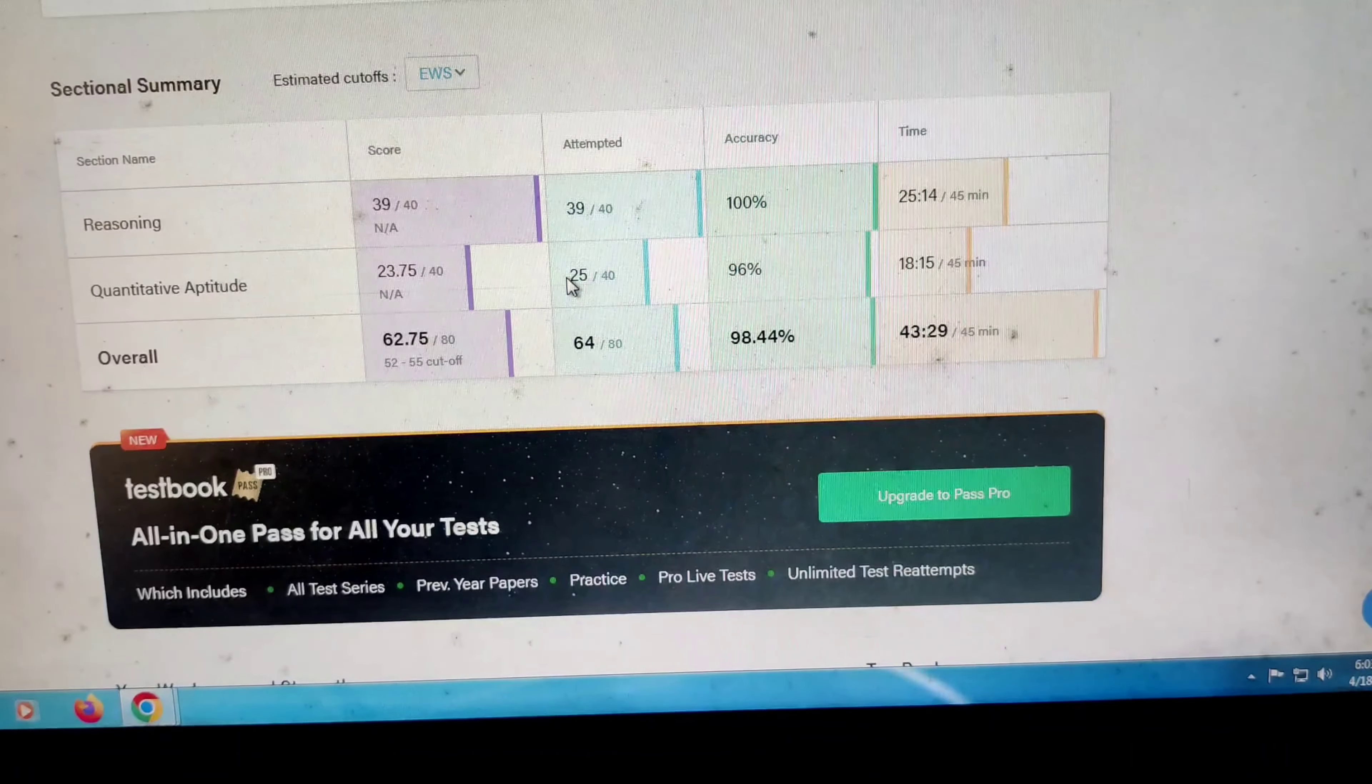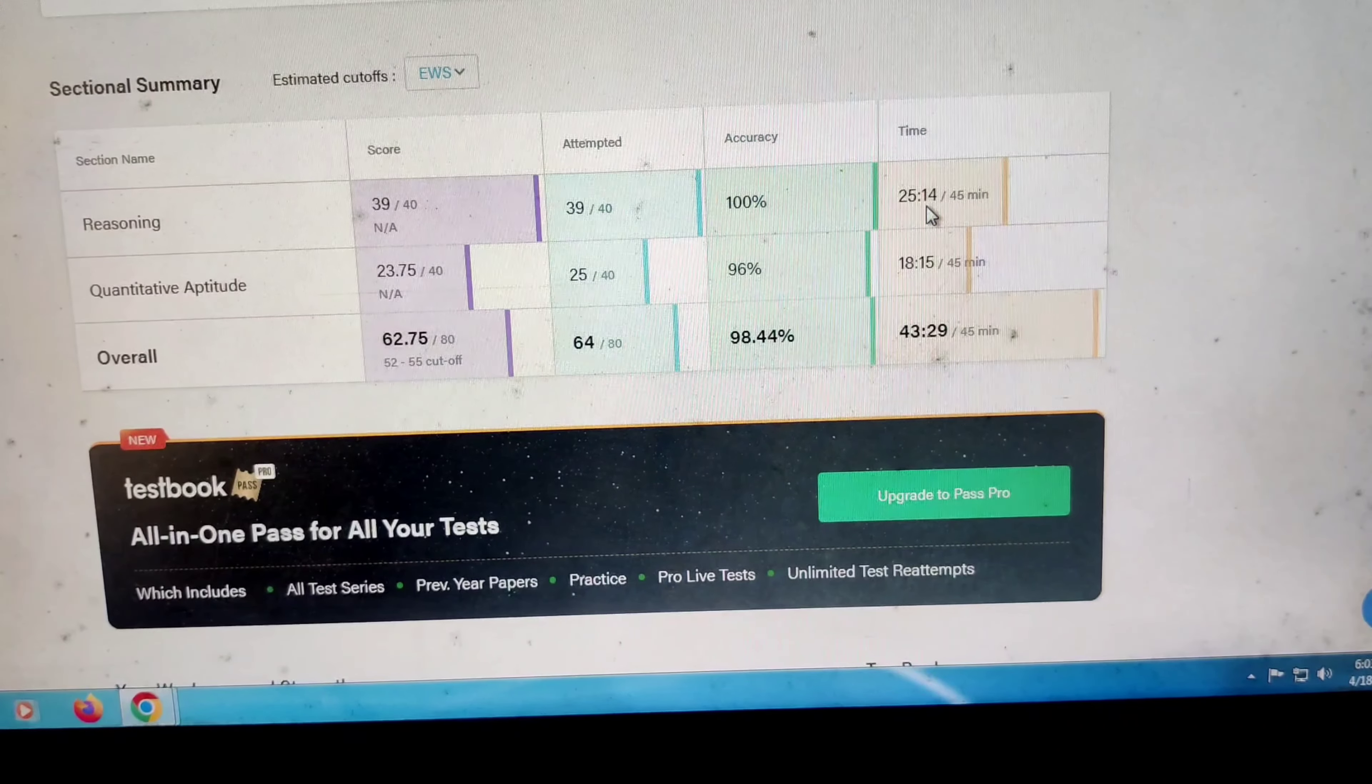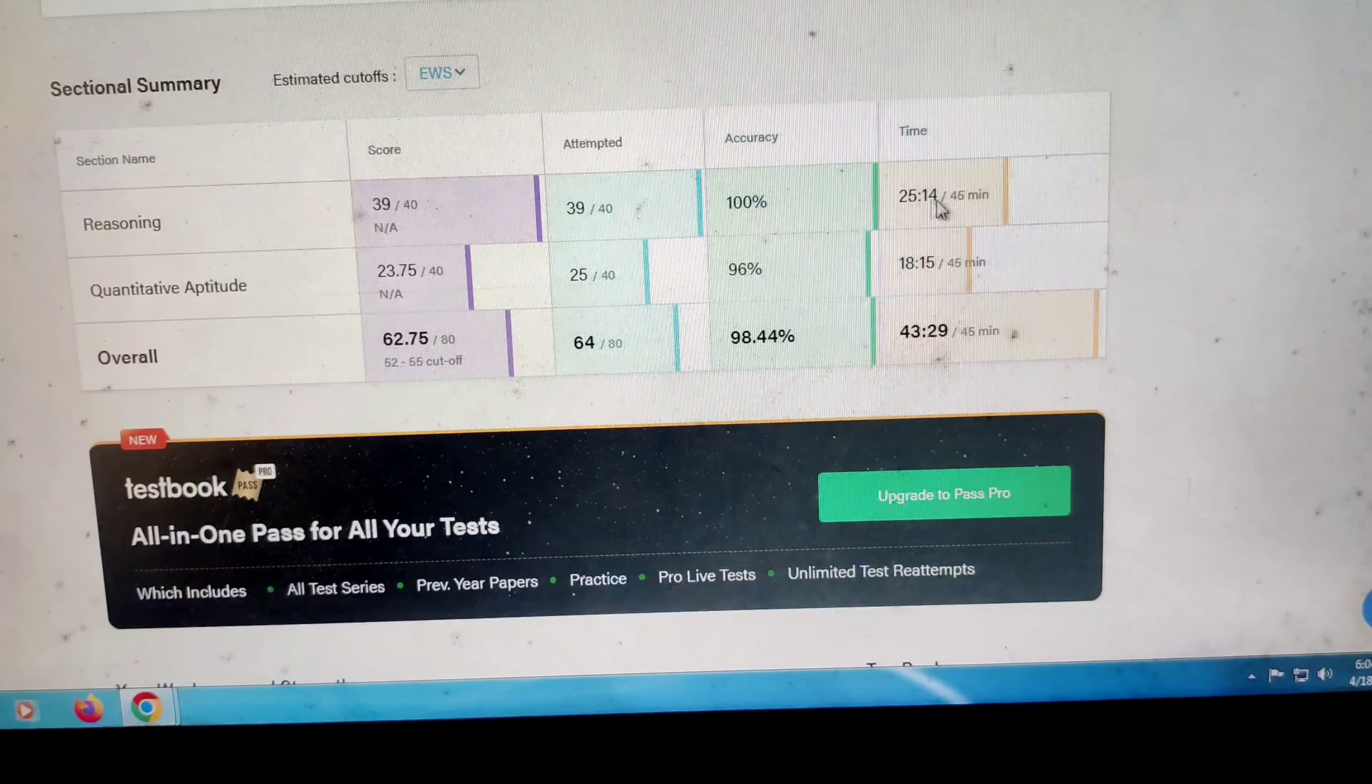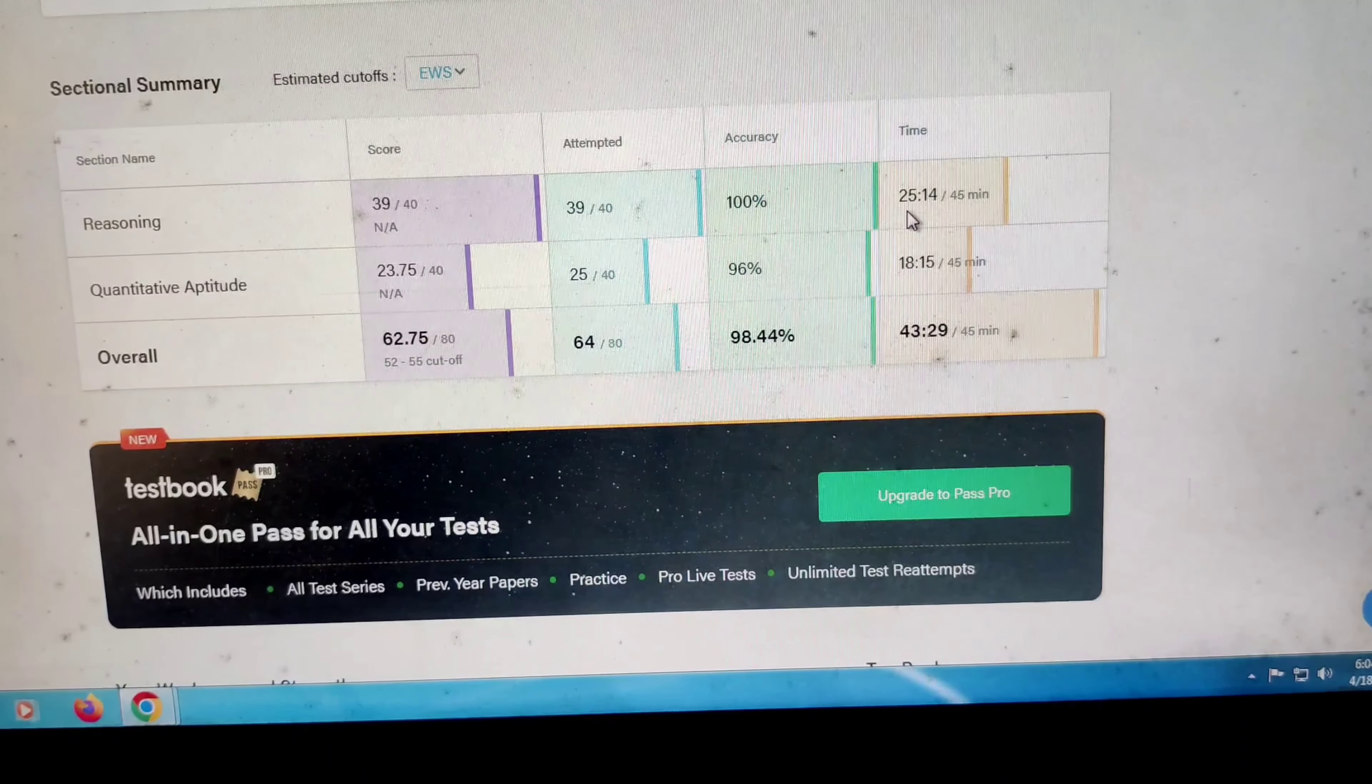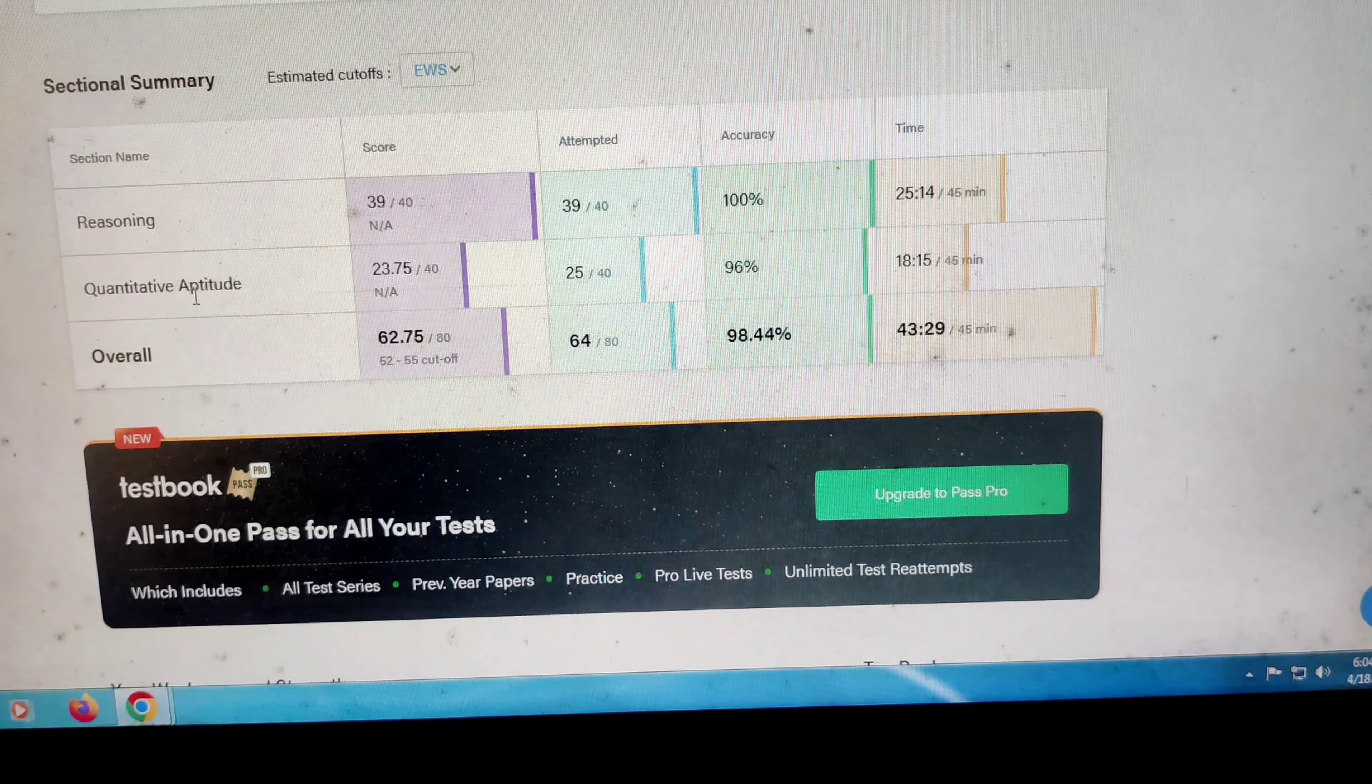In reasoning I attempted only 39 questions out of 40, all 39 correct with 100% accuracy. And in quant I attempted only 25 questions, I think one question is wrong, overall I got 23.75 with 96% accuracy. So this is the time I invested on reasoning and quant: 25 minutes 14 seconds I completed reasoning, I allotted 25 minutes 14 seconds for reasoning, and in quant I allotted 18 minutes 15 seconds. So first I thought I'd give 23 minutes for reasoning, 22 minutes for quant, but in one of the puzzles I got stuck, so that's why overall 25 minutes for reasoning and 18 minutes for quant.